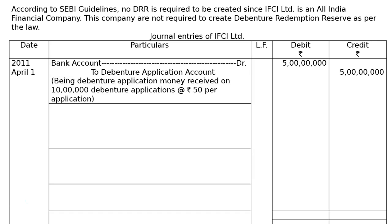The year is 2011. The first entry on April 1: Bank Account debited to Debenture Application Account — being debenture application money received on 10 lakh debentures at rupees 50 per debenture application, that is rupees 50 lakhs (10 lakhs multiplied by 50).